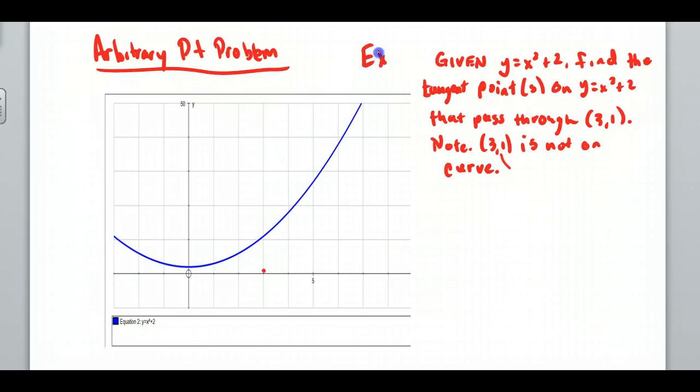For example, let's look at this one and see what we're dealing with. If I give you y equals x squared plus 2, find the tangent point or points on y equals x squared plus 2 that pass through (3,1). Now note that (3,1) is not on this equation. So what we're going to have is this point here, (3,1). My scale is off a little bit because these are by tens. This is up to 50, just to get this picture appropriate.